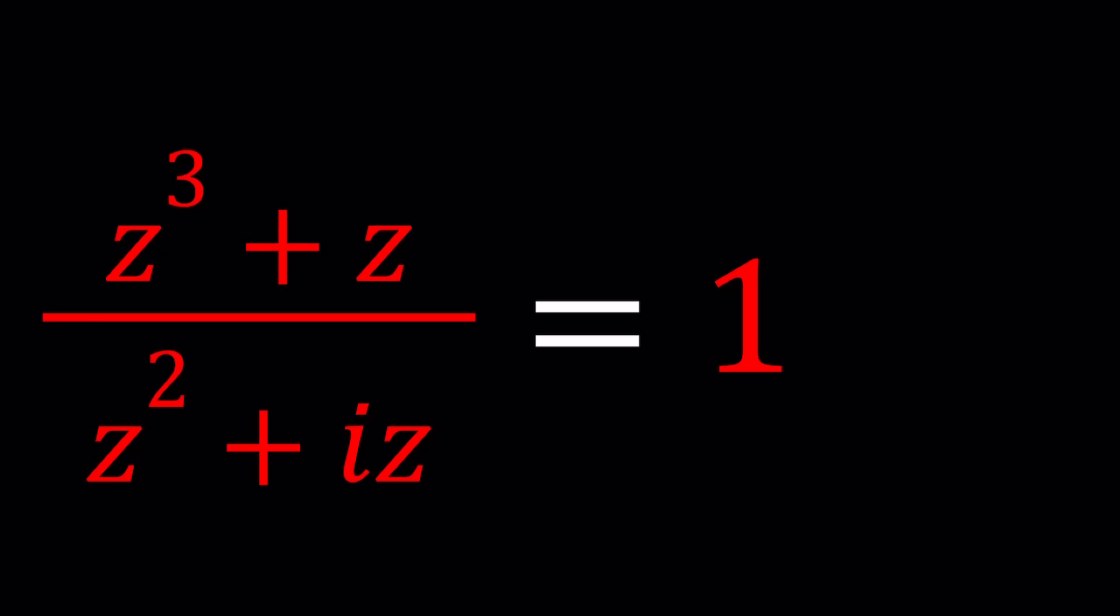We have a lot of z's, don't we? We have z cubed plus z in the numerator and z squared plus iz in the denominator and that ratio is equal to 1 which means they are equal, right? Basically, but I just didn't want to write it as an equality like that. This looks more fun to me.